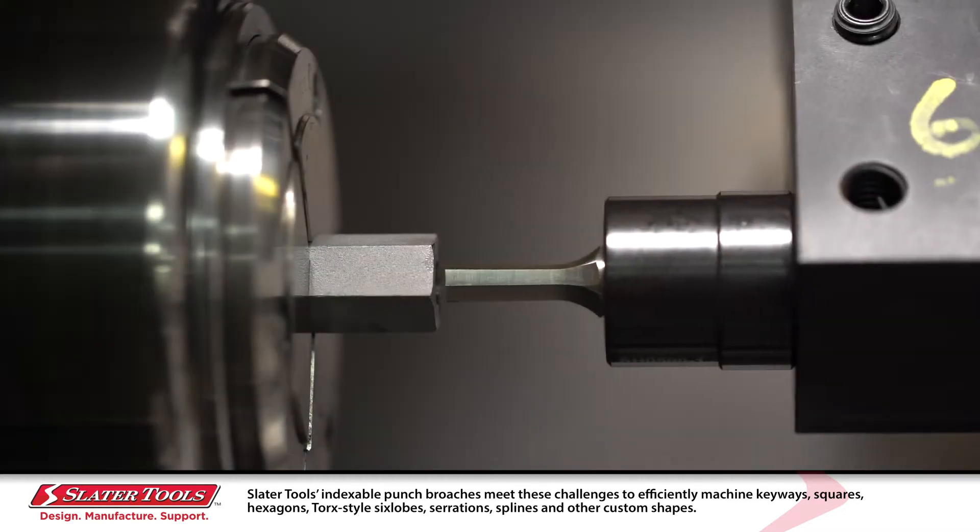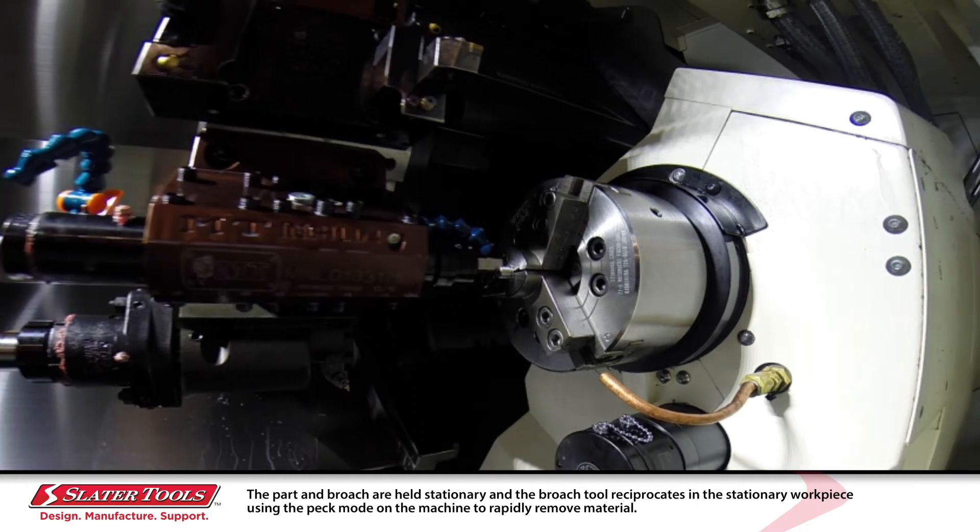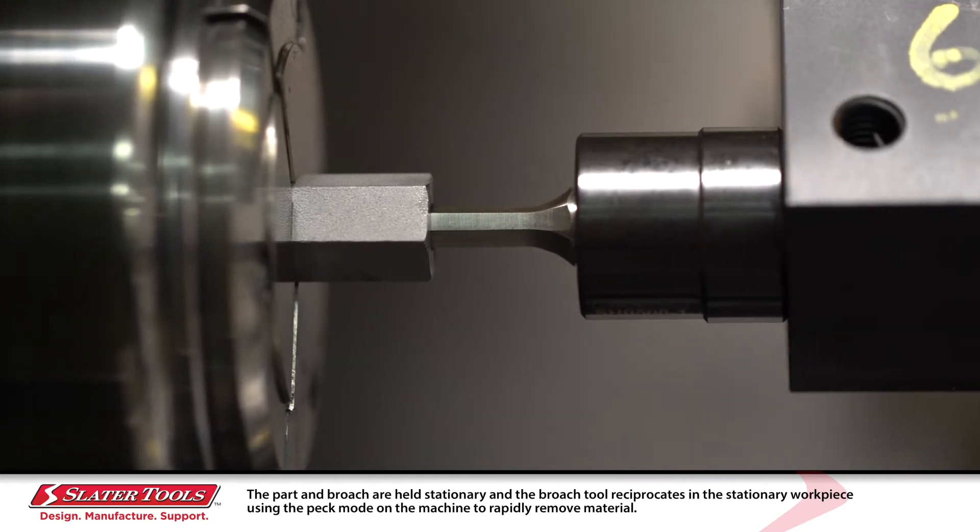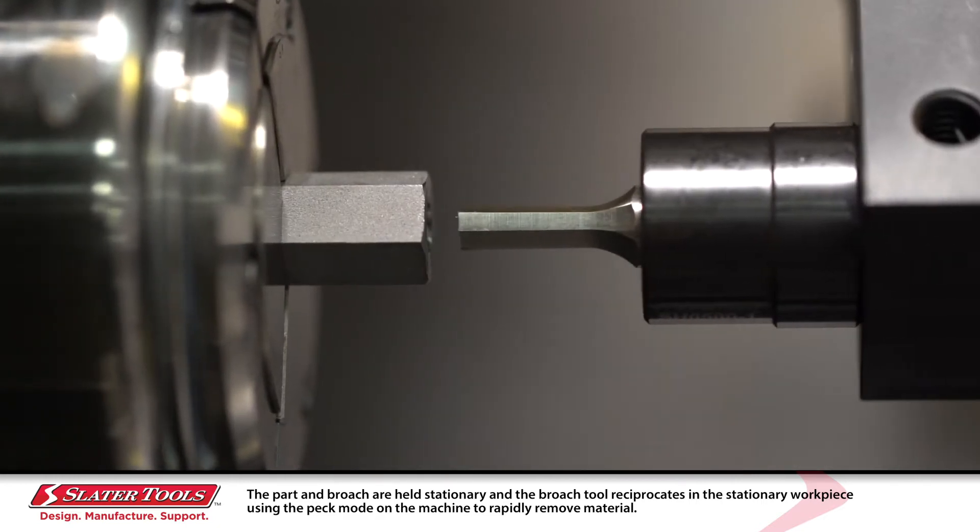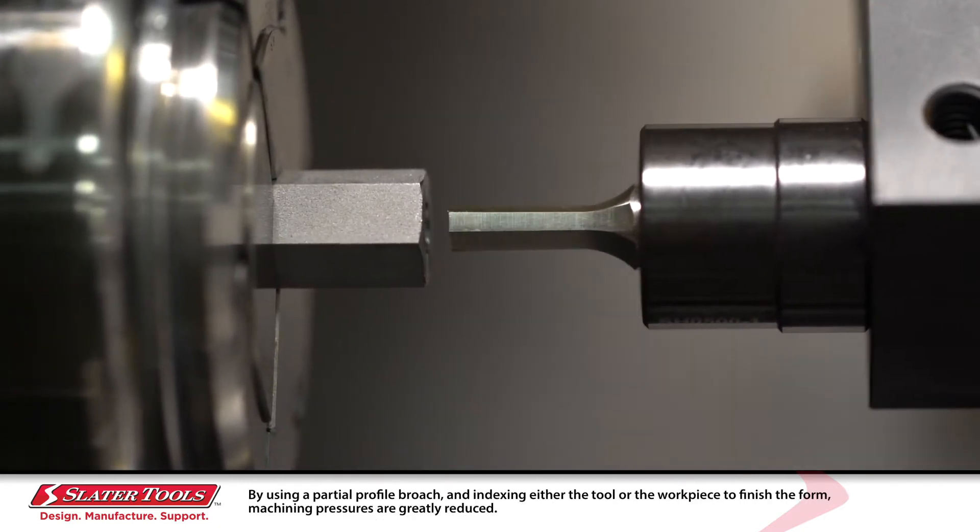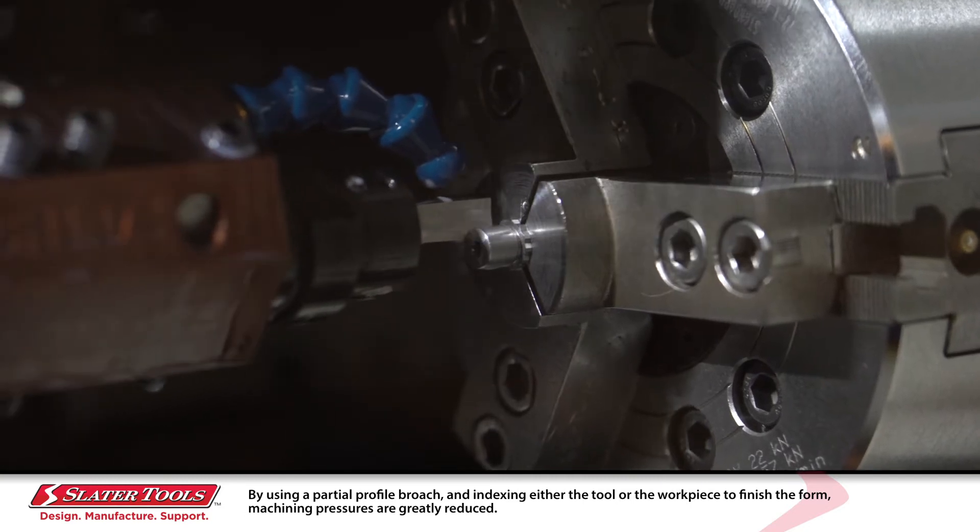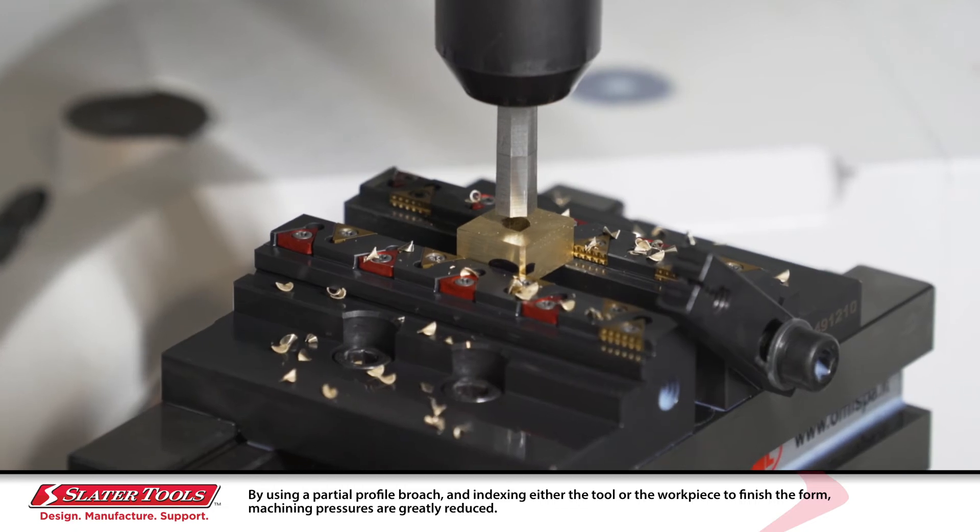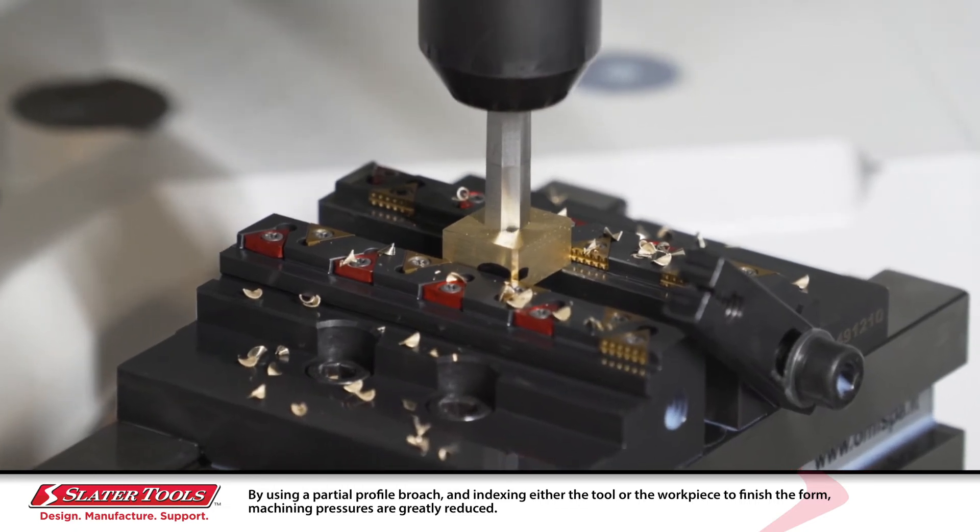How does it work? The part and broach are held stationary and the broach tool reciprocates in the stationary workpiece using the pec mode on the machine to rapidly remove material. By using a partial profile broach and indexing either the tool or the workpiece to finish the form, machining pressures are greatly reduced.